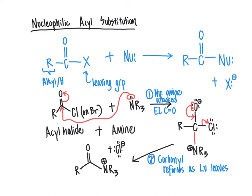At this point we have NR3+ on nitrogen and a chloride anion. Generally at the end of reactions we adjust pH so that we don't have cations or anions. So if one of the R groups on nitrogen is a hydrogen, the third step is deprotonation to remove that proton and create the final amide product.